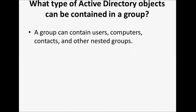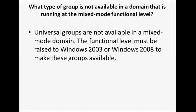What type of Active Directory objects can be contained in a group? A group can contain users, computers, contacts, and other nested groups. What type of group is not available in a domain running at a mixed-mode functional level? Universal groups are not available in a mixed-mode domain. The functional level must be raised to Windows 2003 or Windows 2008 to make these groups available.